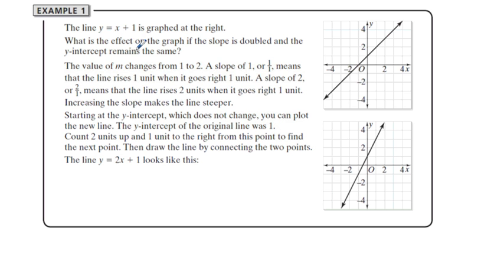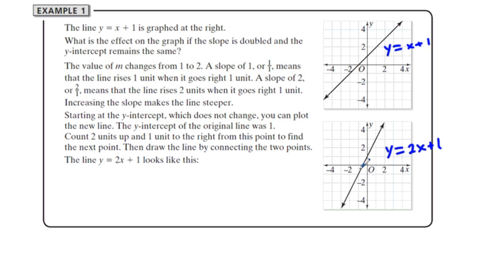Example: the line y equals x plus one is graphed. What's the effect on the graph if the slope is doubled and the y-intercept remains the same? Doubling the slope means a steeper line — twice as steep. The original equation is y equals x plus one with a slope of one. If we make it twice as steep, the new equation is y equals two x plus one, with a slope of two.